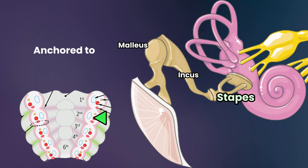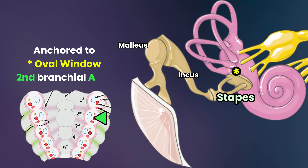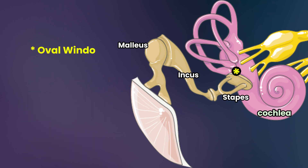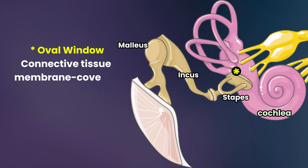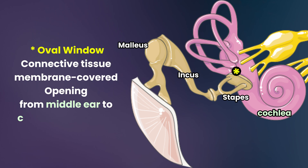The stapes, which is anchored to the oval window of the inner ear, derives from the second branchial arch. The oval window is a connective tissue membrane-covered opening from the middle ear to the cochlea of the inner ear.